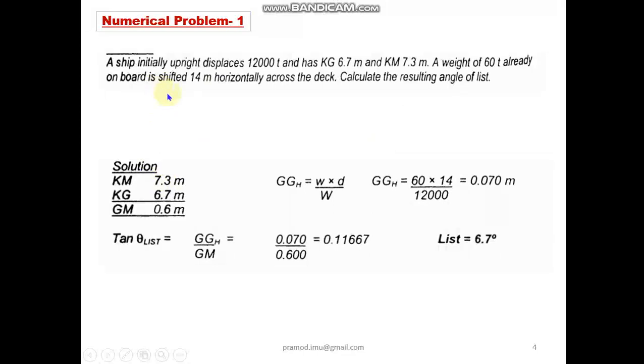So very simple question and the solution also is very simple. KM is given 7.3, KG is given as 6.7. So your GM becomes 0.6 meters, and GG_h we apply the formula which we have discussed. So this is small w into d by capital W. So it is already said that 60 tons has shifted 14 meters. So 60 into 14 by 12,000. So GG_h becomes 0.07 meters. Apply this directly in your list triangle formulae. You will get tan theta as 0.11667 and theta as 6.7 degree. So this is your angle of list.